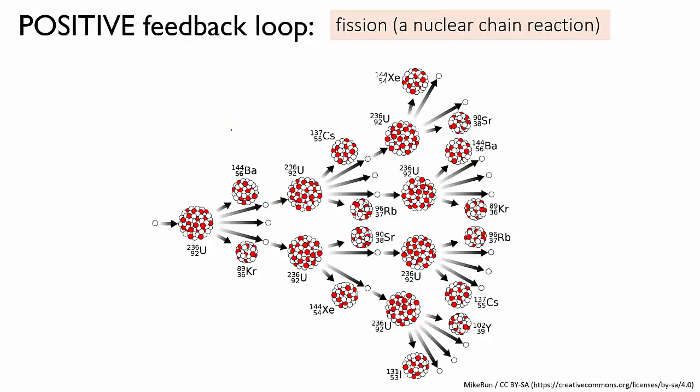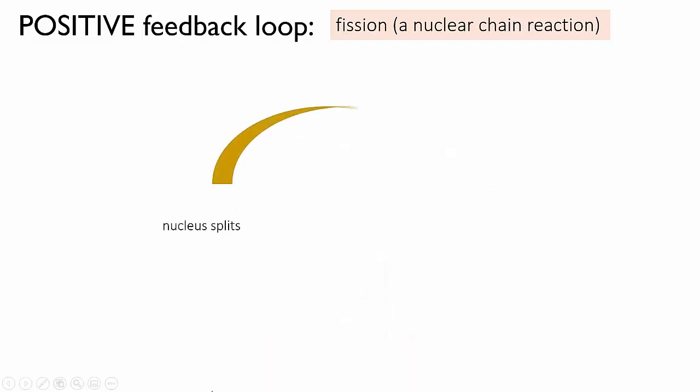Another example of a positive feedback loop is the nuclear reaction process of fission. This is a type of nuclear reaction in which a large unstable atomic nucleus breaks apart into two smaller nuclei. When it does so, it releases a few stray neutrons. Those neutrons smash into nearby atoms and cause them to split, which releases further neutrons, which causes more atoms to split, and so on. We can adapt our little animation to illustrate this.